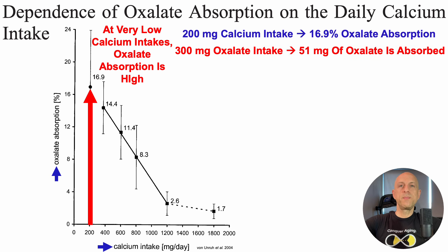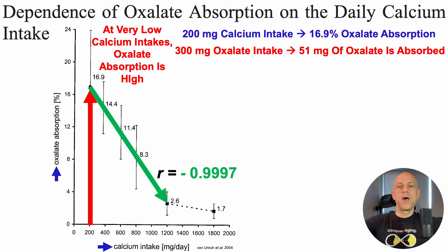To put this into perspective: 300 milligrams of oxalate is considered a high-oxalate-containing diet. So for someone eating only 200 mg of calcium per day, 51 of those milligrams of oxalate would be absorbed, potentially increasing plasma oxalate concentration. But as calcium intake increases from 200 to 1,200 mg per day, there is an almost perfectly inverse linear correlation — the correlation coefficient is −0.9997, where a perfect linear correlation would be −1.0 — between calcium intake and oxalate absorption.